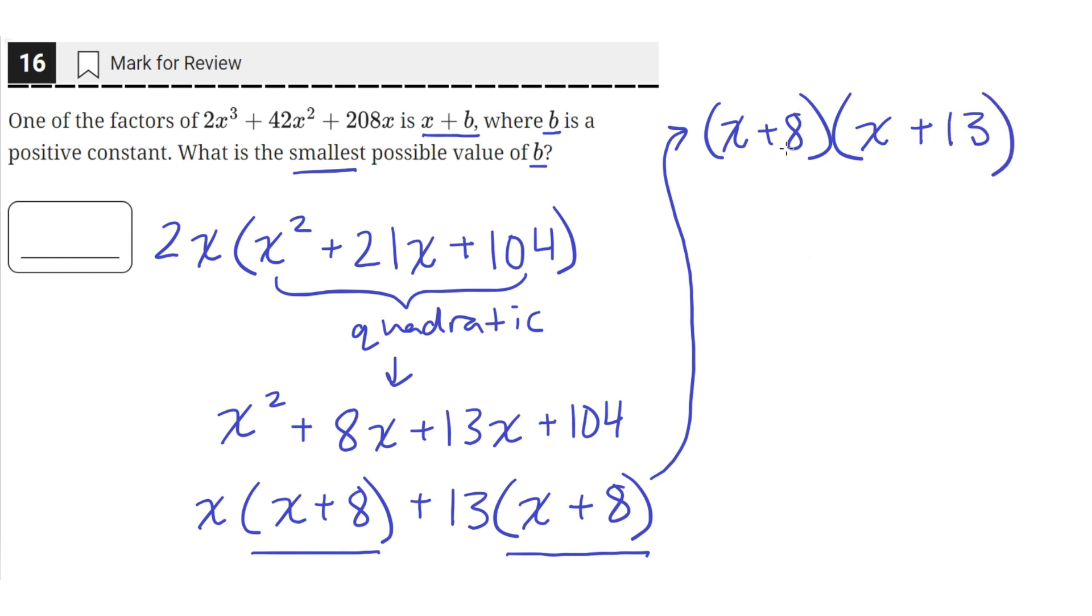Okay, so then let's plug this factored expression back into our original expression. So we'll have 2x times x plus 8, and then x plus 13. So this is a completely factored form of our original expression up here.